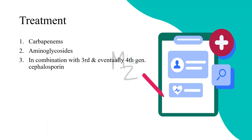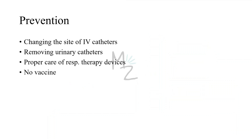Treatment: Carbapenems and aminoglycosides are used in combination with third- and fourth-generation cephalosporins. Prevention includes changing IV catheter sites, removing urinary catheters when S. marcescens is found on them, and proper care of respiratory therapy devices, as these play an important role in causing infections. There is currently no vaccine against Serratia marcescens infections.